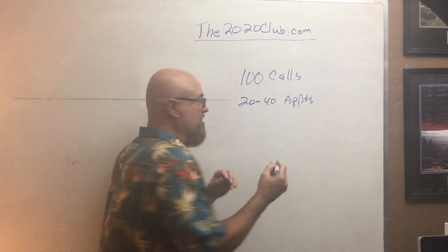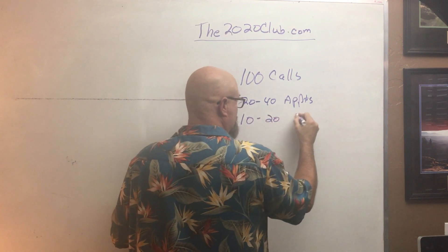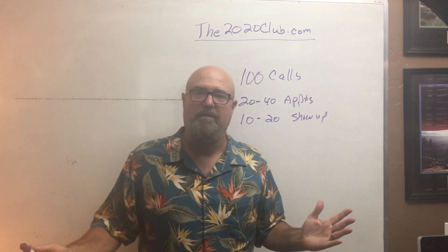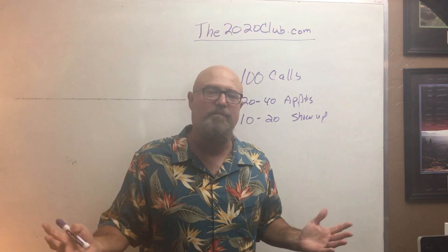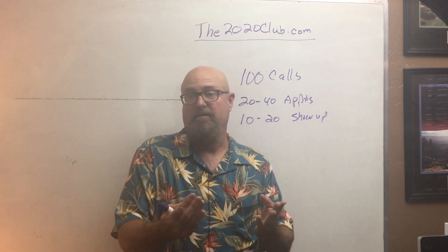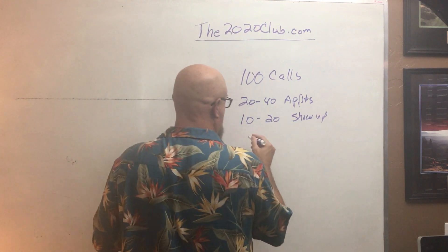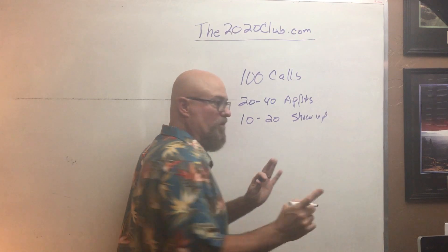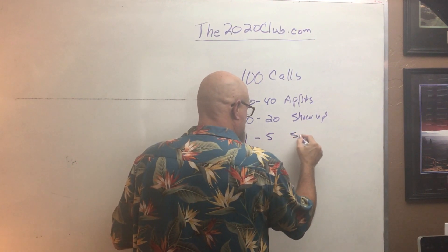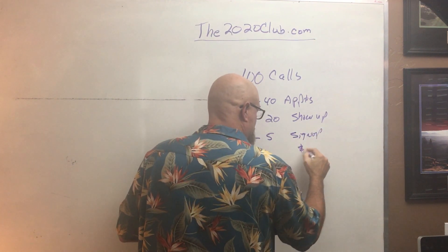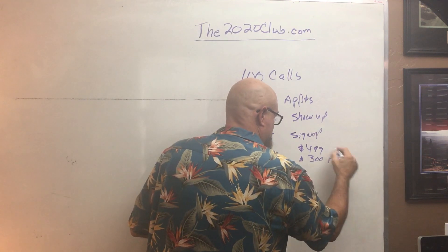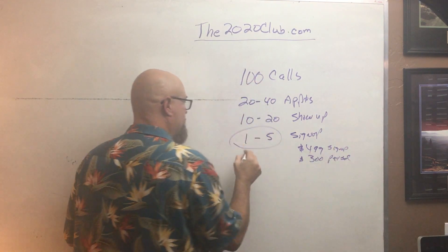Out of those 20 to 40 appointments, I'll get 10 to 20 of those people to show up at the allotted time. Some of them you never hear back from; others you have to reschedule because something came up — they didn't watch the video, they didn't read the PDF, life got in the way. Out of the 10 to 20 that show up, based on your pricing point, my normal program — which I'm going to show you here today — I'm getting anywhere from one to five sign-ups. My program is $499 and I make $300 per sale. So one to five out of 100 calls — that's my system.